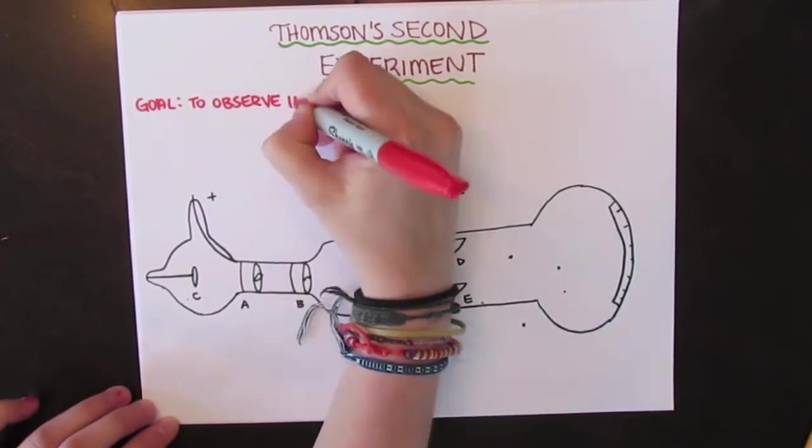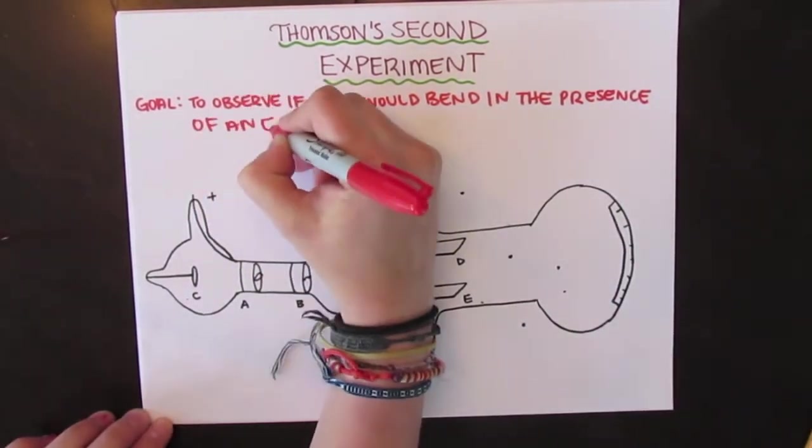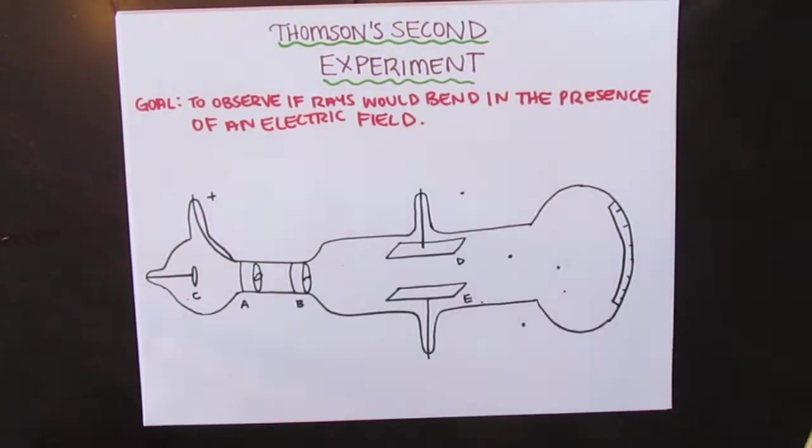Thomson's second experiment tested whether the rays would bend in the presence of an electric field, which is what was expected for a charged particle.